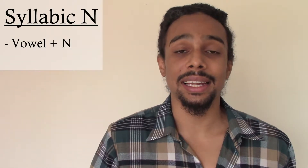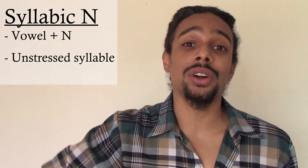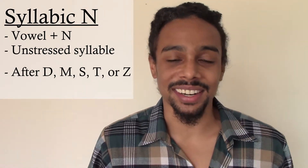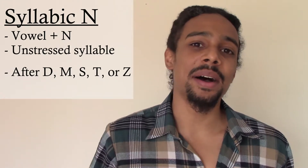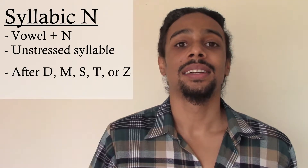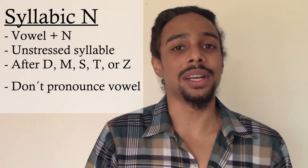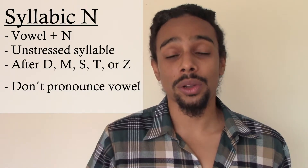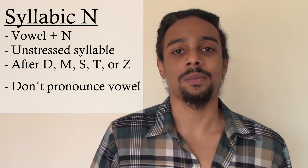So the rule is: when you have a vowel plus N in an unstressed syllable, and it comes after any of the letters D, M, S, T, or Z, what we do is we do not pronounce the vowel sound — we only pronounce the N sound. So let's look at some examples.